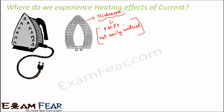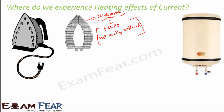Iron is not the only example; there are other examples as well. For example, the geyser which we use in our bathrooms to heat water. Inside the geyser, there are materials known as heating elements, because it is due to those elements that the heating effect of current is experienced. Similarly, even inside the geyser there is a heating element present, and that heating element heats up and that heat is then used to make the water hot.